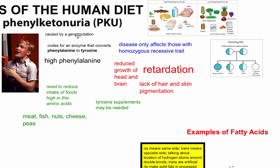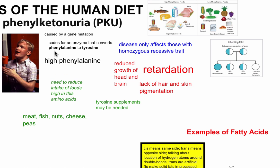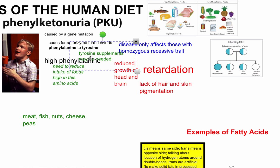The gene involved codes for an enzyme that converts the amino acid phenylalanine into tyrosine. In a normally functioning person, phenylalanine gets broken down and you end up with tyrosine. If you're unable to make this enzyme, phenylalanine builds up in the bloodstream and you don't get enough tyrosine. So people with PKU need to reduce intake of foods high in phenylalanine and may also need to take tyrosine supplements.